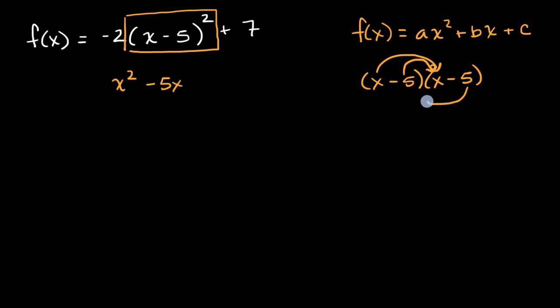And then you have another negative five times this x, which is going to be another minus five x. And then you're going to have negative five times negative five is plus 25. Or we could write this as x squared minus 10x plus 25. And so that's what I have boxed off here. Let me put that in parentheses.